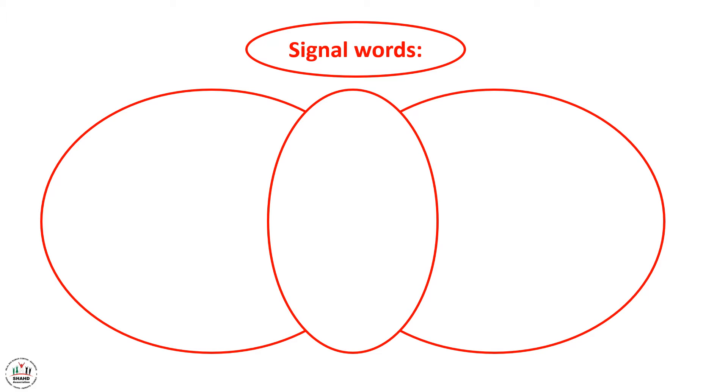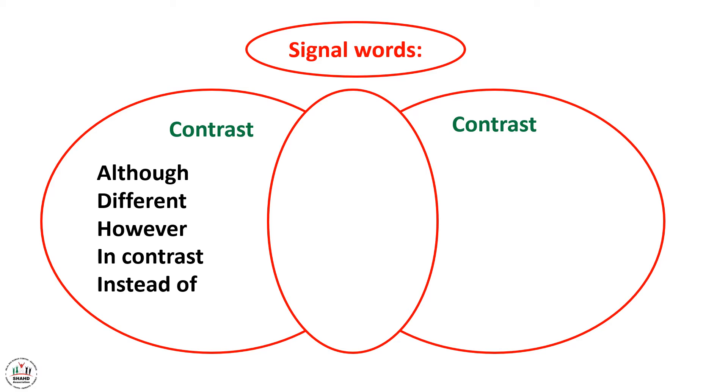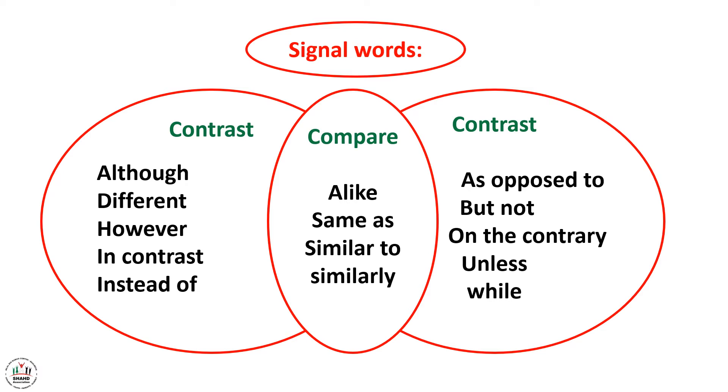Here are some signal words. When you contrast, use although, different, however, in contrast, instead of, as opposite to, but not, on the contrary, unless, and while. When you compare, use alike, same as, similar to, similarly.